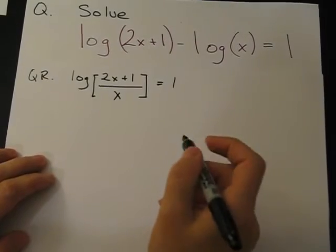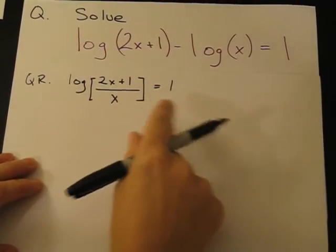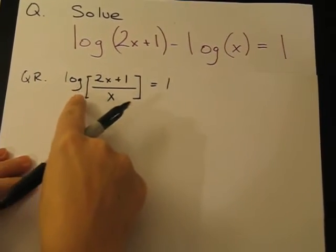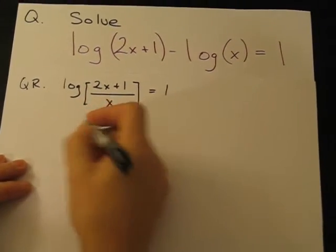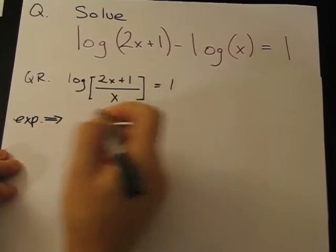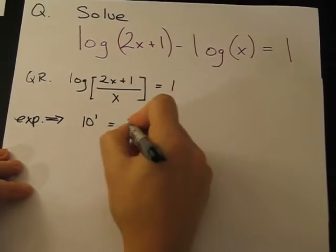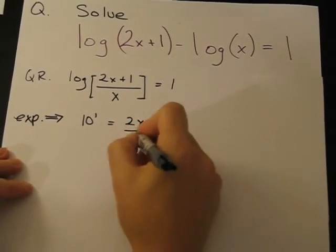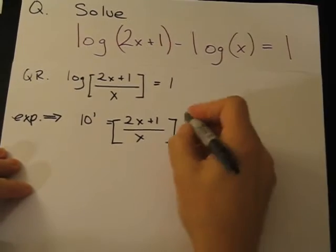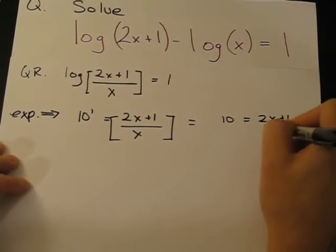Our next step will be to turn this into the exponential form, because we know that logs are just exponents. So for this one, we have a log base 10, which is a common log, so the exponential form is 10^1 = (2x + 1)/x. So if we simplify that, it's just 10 = (2x + 1)/x.